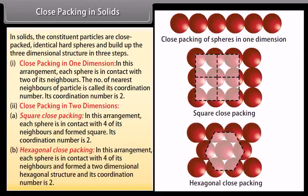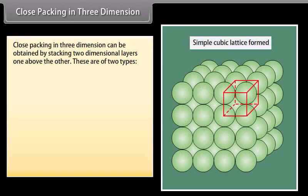In hexagonal close packing (2D), each sphere is in contact with six of its neighbors, forming a two-dimensional hexagonal structure, and its coordination number is 6. Close packing in three dimensions can be obtained by stacking two-dimensional layers one above the other.